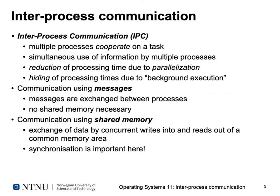Inter-process communication lets us build software systems where multiple processes cooperate on one task, simultaneously accessing shared information. We do this because multiple processors or computers can reduce processing time by working in parallel, or we can hide processing time through background execution — delegating a task to run in the background.